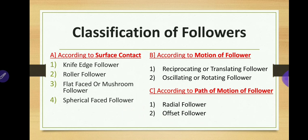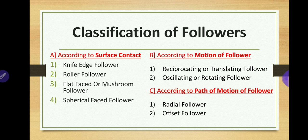Now we will see the classification of followers, then the classification of cams. Followers are broadly classified into three categories: first, according to the surface contact; second, according to the motion of the follower; and third, according to the path of motion of the follower. One important note: cam and follower have line contact between them, that is why they are called higher pairs. When contact between two links is line contact or point contact, they are called higher pairs; if it is surface contact, they are called lower pairs.